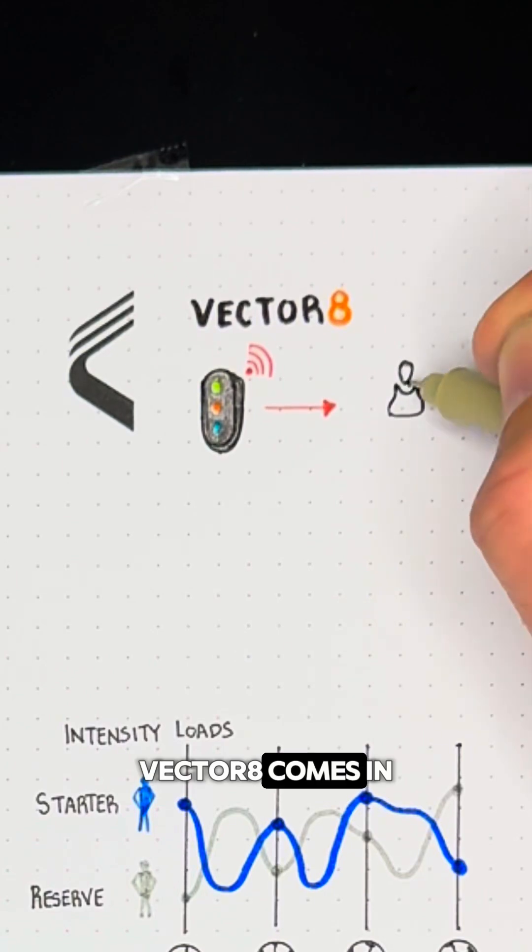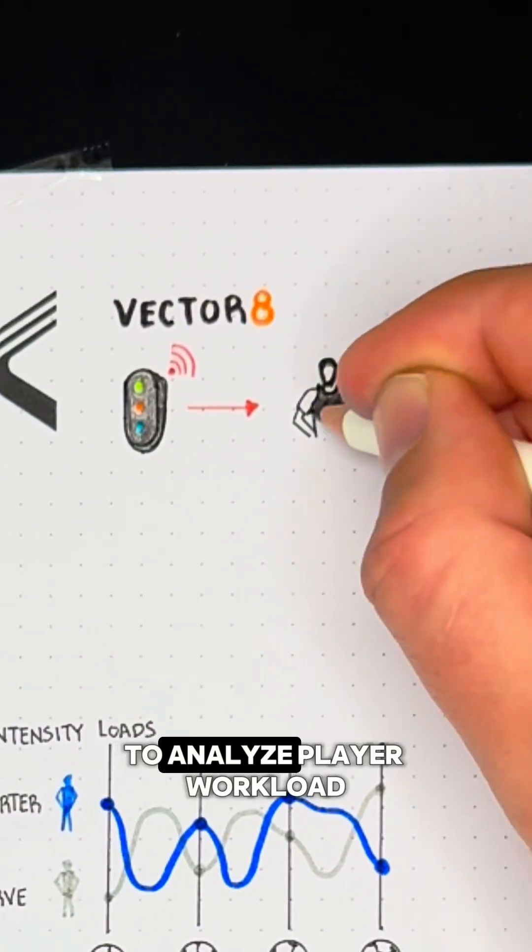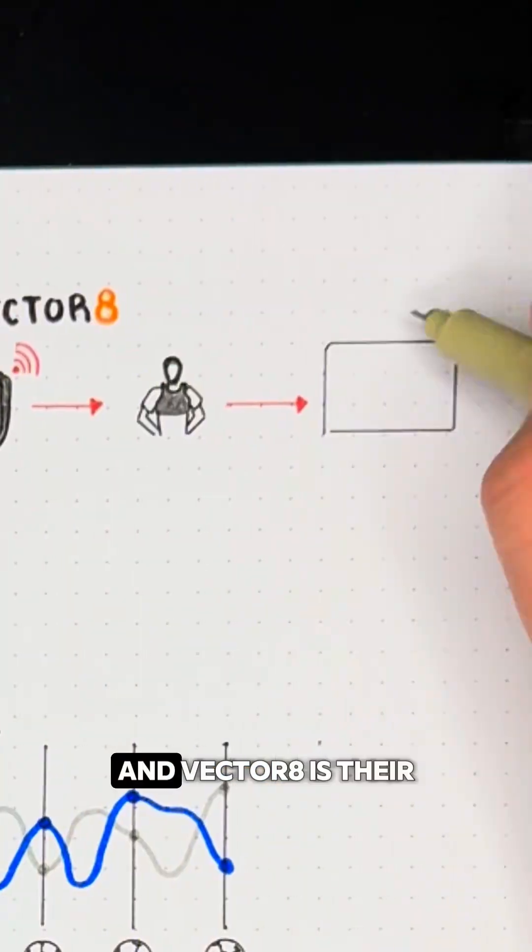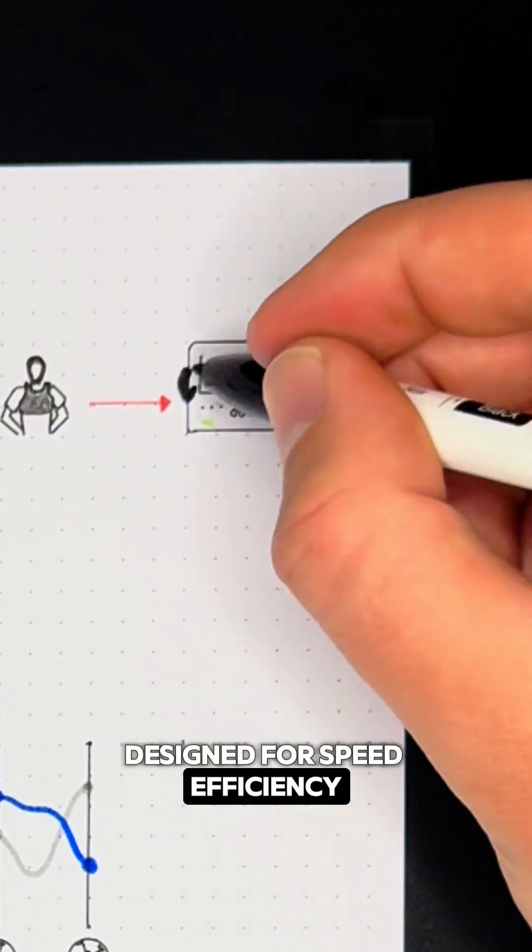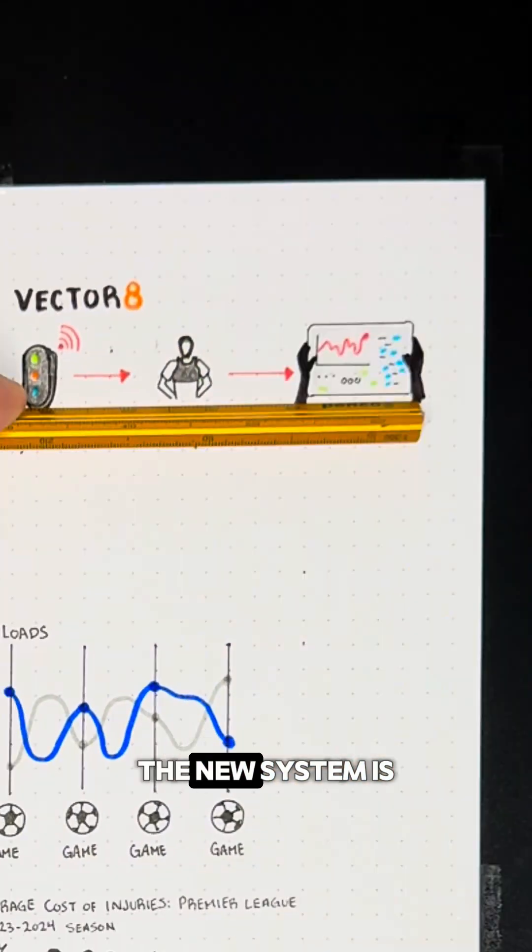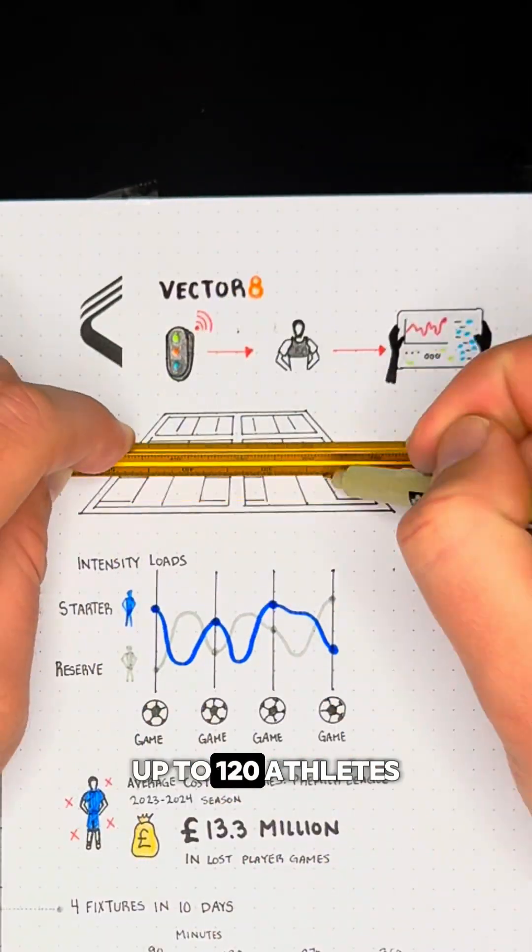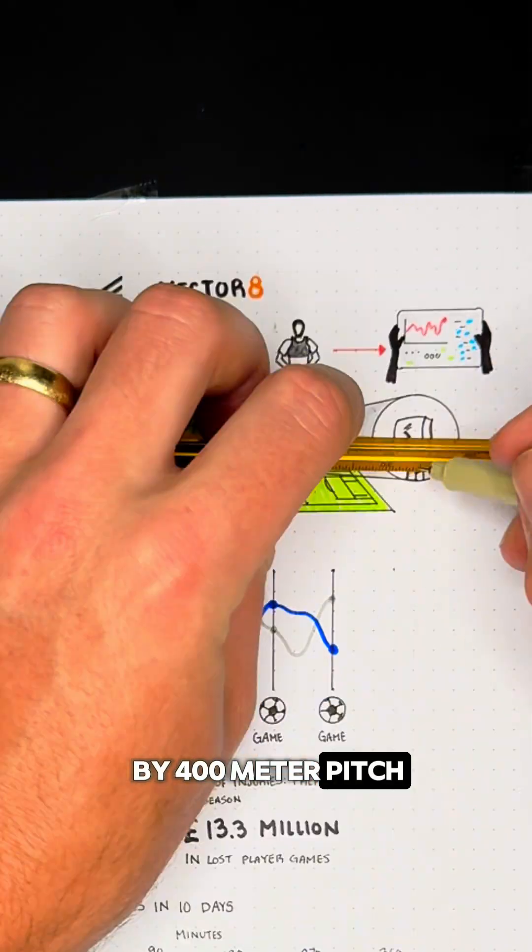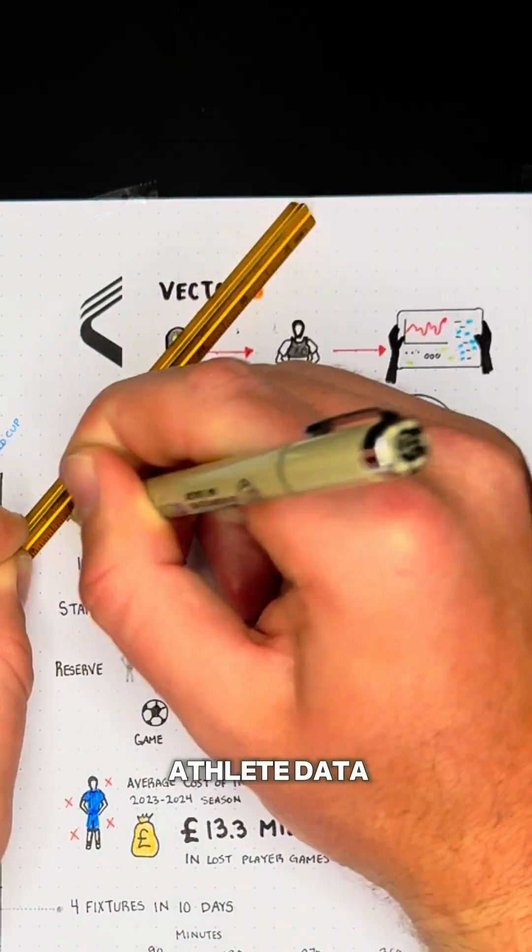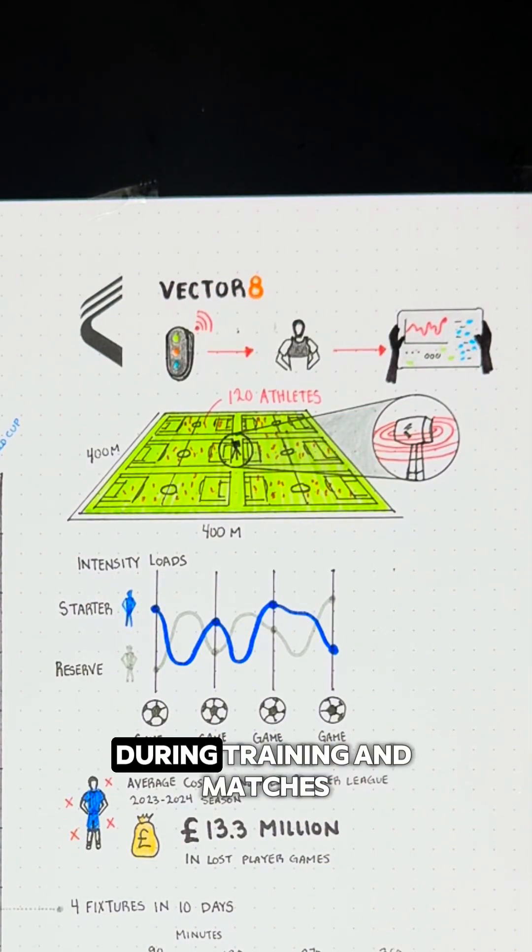That's where Catapult's Vector 8 comes in. You see, teams have been using Catapult to analyze player workload for years, and Vector 8 is their latest athlete monitoring system designed for speed, efficiency, and real-time decisions. The new system is capable of live tracking up to 120 athletes across a 400-meter by 400-meter pitch, gaining access to critical athlete data to make real-time decisions during training and matches.